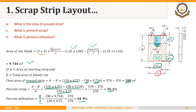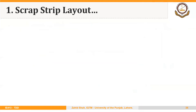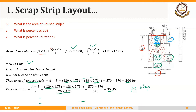In this way, we can calculate how many strips we can cut from the starting sheet, how many blanks we can cut from a strip, and the unused area, percent scrap, and percent utilization. Keep in mind that these percent scrap and percent utilization calculations are per strip, not for the whole sheet. In the next segment, we will discuss how to make similar calculations for a narrow run layout and then compare the two layouts.